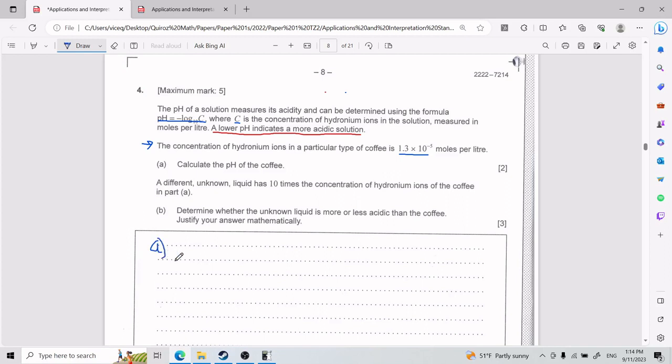And so for part A, we need to calculate the pH of the coffee. Now for these sort of problems, usually they throw a lot of information at you and it can be a little bit confusing. So when you face one of these, read the problem a couple of times, highlight the important words as I did just now and work from there. And so this guy in blue that I'm going to put now is a formula. It's a formula that helps us determine the pH, or in other words, the acidity of something. So pH equals negative log base 10 times C.